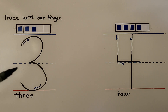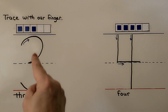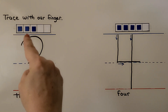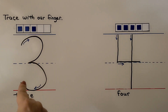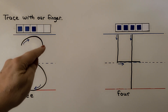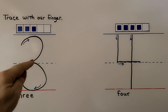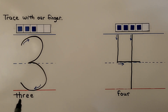Here we have the number 3: 1, 2, 3. We can trace it with our finger. With our right hand, we start here, come around to the dotted line, and then come around again to the bottom line. With our left hand, we start here, come around to the dotted line, and come around again to the bottom line. And here's the word 3.